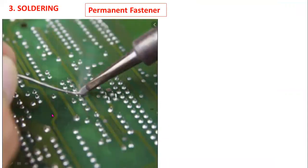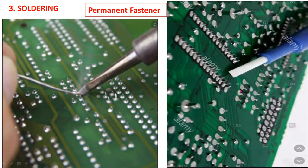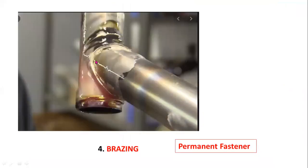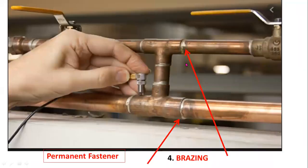This is the example for soldering — soldering is used for circuits, for joining wires. This is the example for brazing — brazing is also used for joining two parts together.